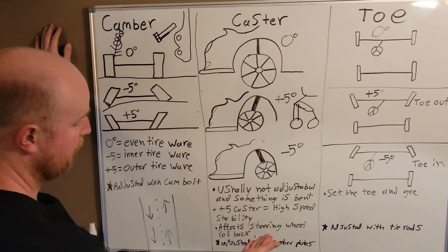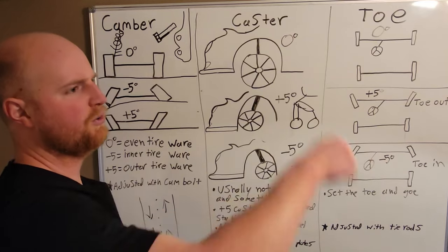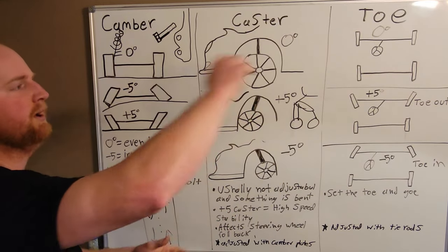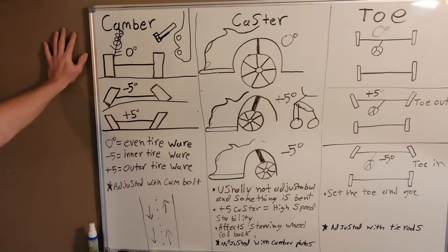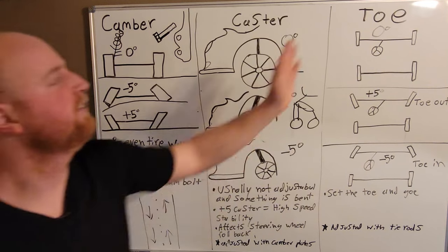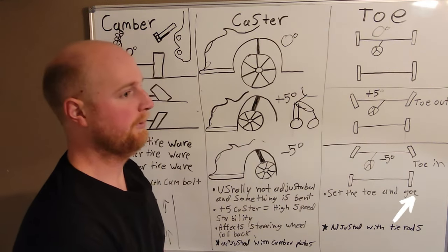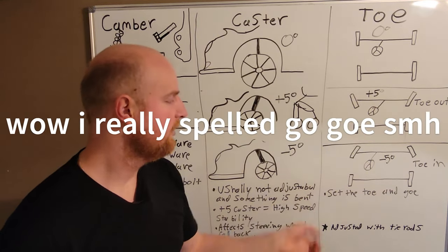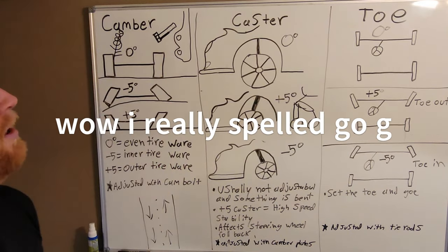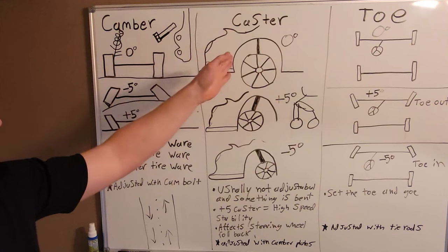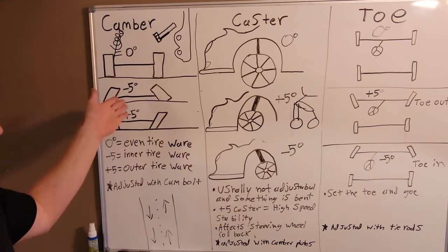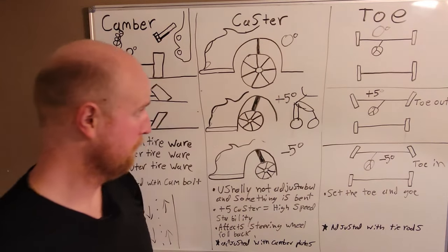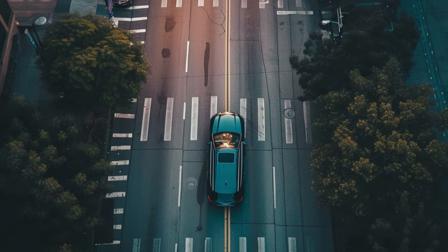Also steering wheel rollback is affected by the amount of caster. That's when you go to turn your wheel and make a turn and then you let go and the steering wheel comes back. The amount of caster you have will affect how well that wheel returns. That's everything about caster you pretty much need to know. It's usually not adjustable. Something must be bent if that's out.